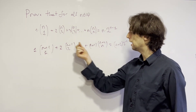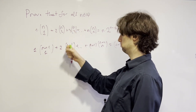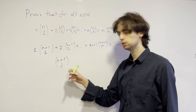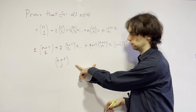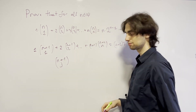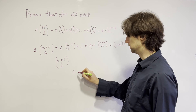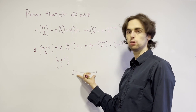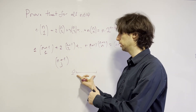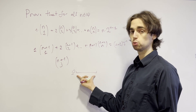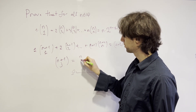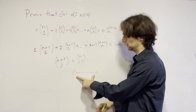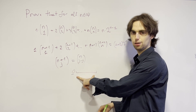When I see n+1 choose j, I ask: in how many ways can I choose j objects from a pile of n+1 of them, and how do I connect this to n? Well, there are two cases. I either pick the first object, or I don't. If I pick the first object, in how many ways can I choose j minus 1 of the remaining n objects? That's n choose j minus 1. If I don't pick the first object, it's n choose j.